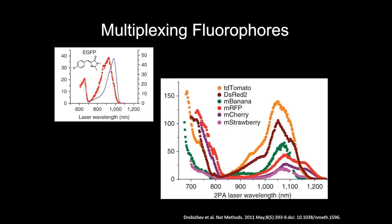If you're planning these experiments, please come talk to us. You can pull up the 2P spectra ahead of time before you order all your animals and do your crosses, because you may find you can't do your imaging with the fluorophore combinations you've chosen.